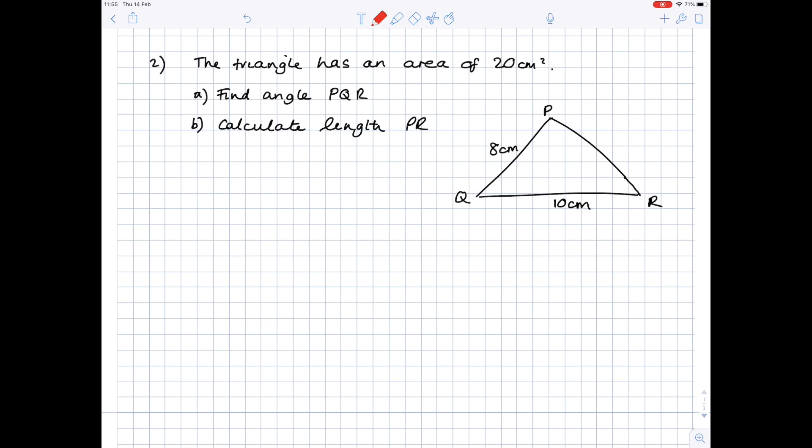So question two is slightly more difficult because we're not being asked to find the area. We're going to have to basically use that equation in a slightly different way in order to solve these questions. So find angle PQR first of all. Notice that when it's written like that, you're actually looking for angle Q. So it's the one in the middle.